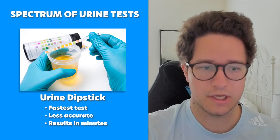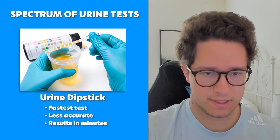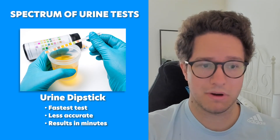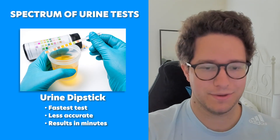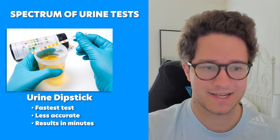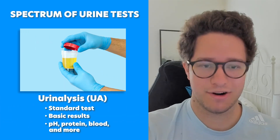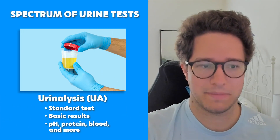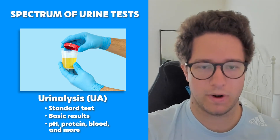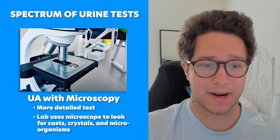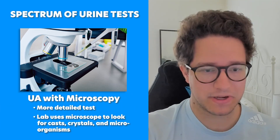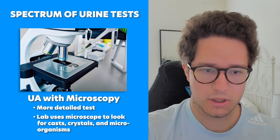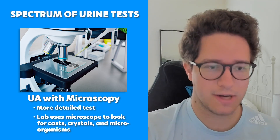Let's start with the most simple: the urine dipstick. This is the fastest test, but less accurate. Results show up in minutes. This is great to use in the family medicine clinic. The urinalysis is the more standard test that gives us basic results about pH, protein, blood, and more. We can add on microscopy — the one we're going to specifically talk about today — which is the more detailed version, where we get all of the information from a urinalysis.